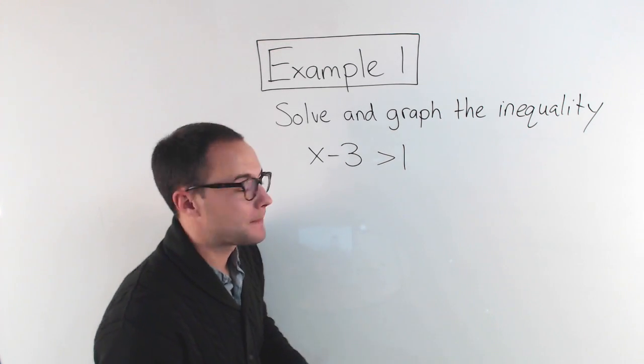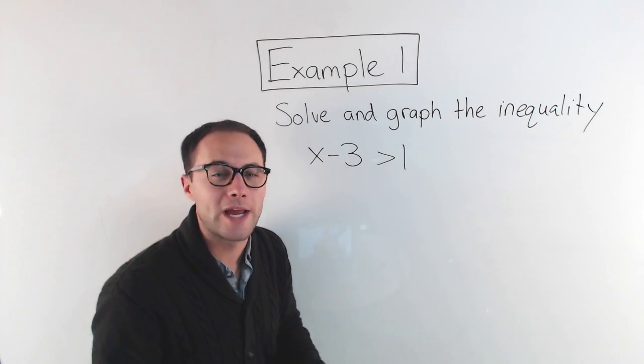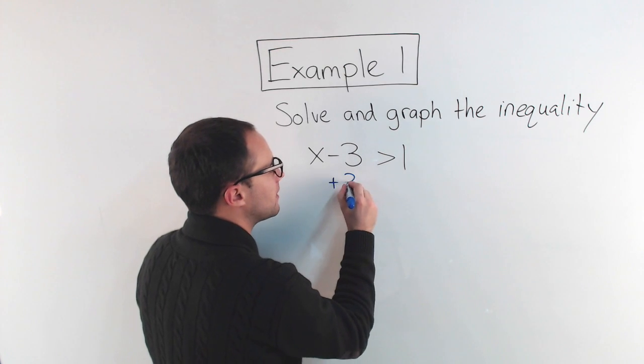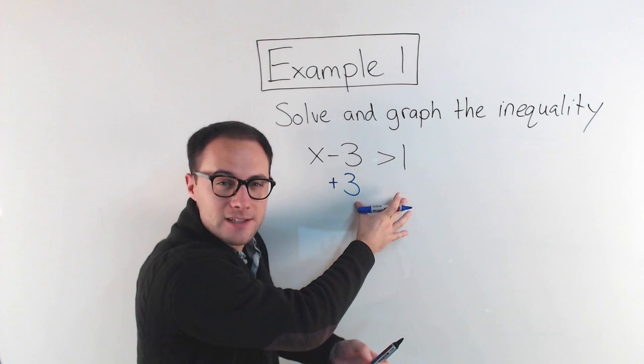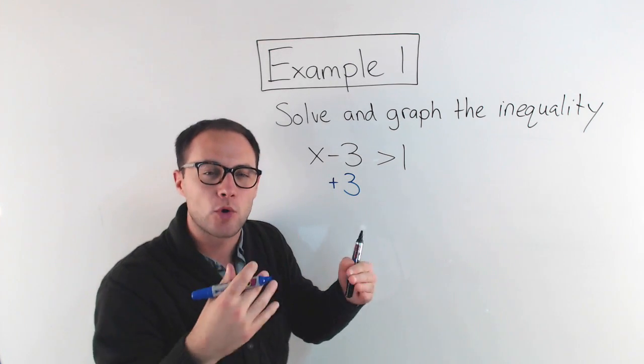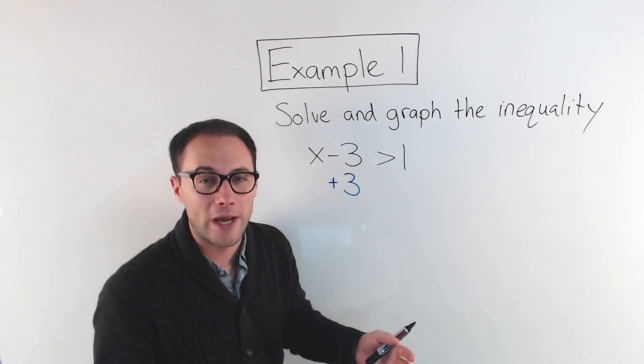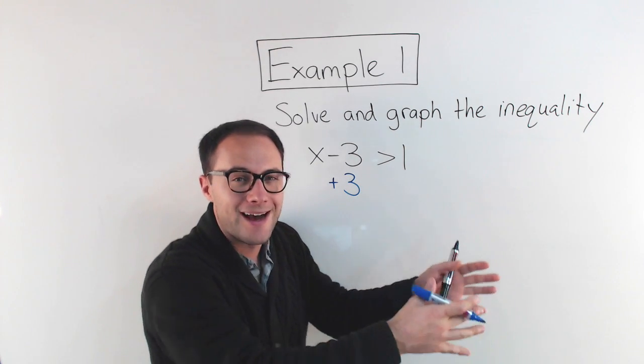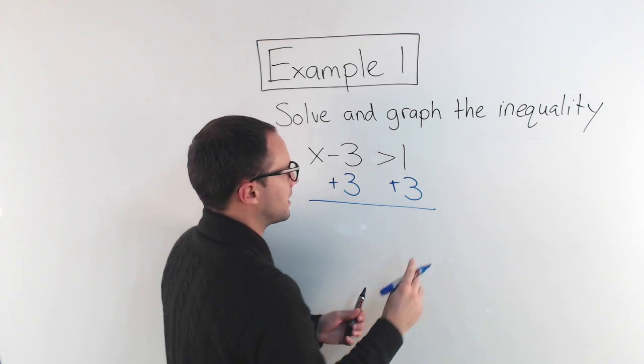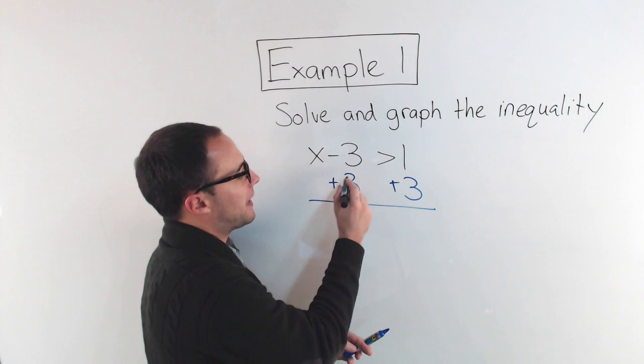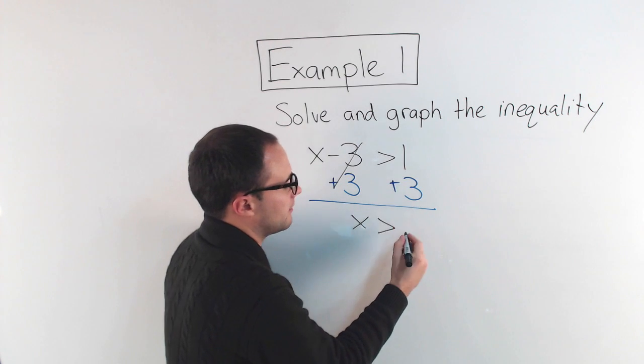So to do that, in this situation I've got x minus 3. Well, I need to get rid of that minus 3, so just like we do with an equation, I'm going to add 3. And like I just showed you, if I add the same thing to both sides of the inequality, the inequality will stay true. So kind of like the golden rule with solving equations, anything I do to one side I have to do to the other. So if I add 3 here, I also add 3 on the other side. So that minus 3 and plus 3 cancel out, become 0. So I just have x is greater than 4.